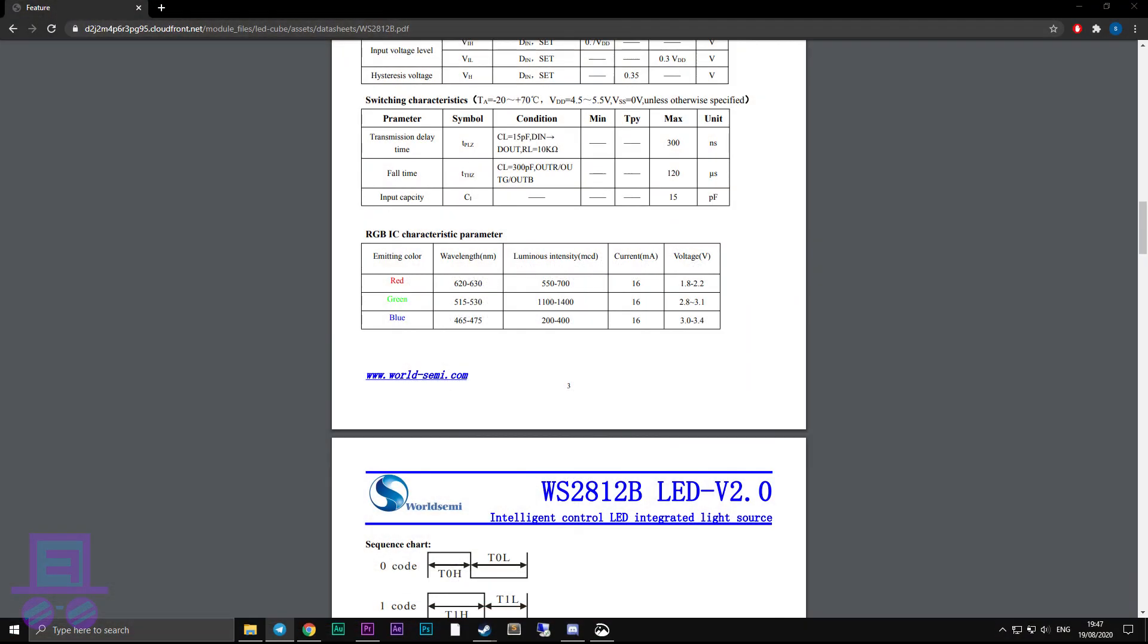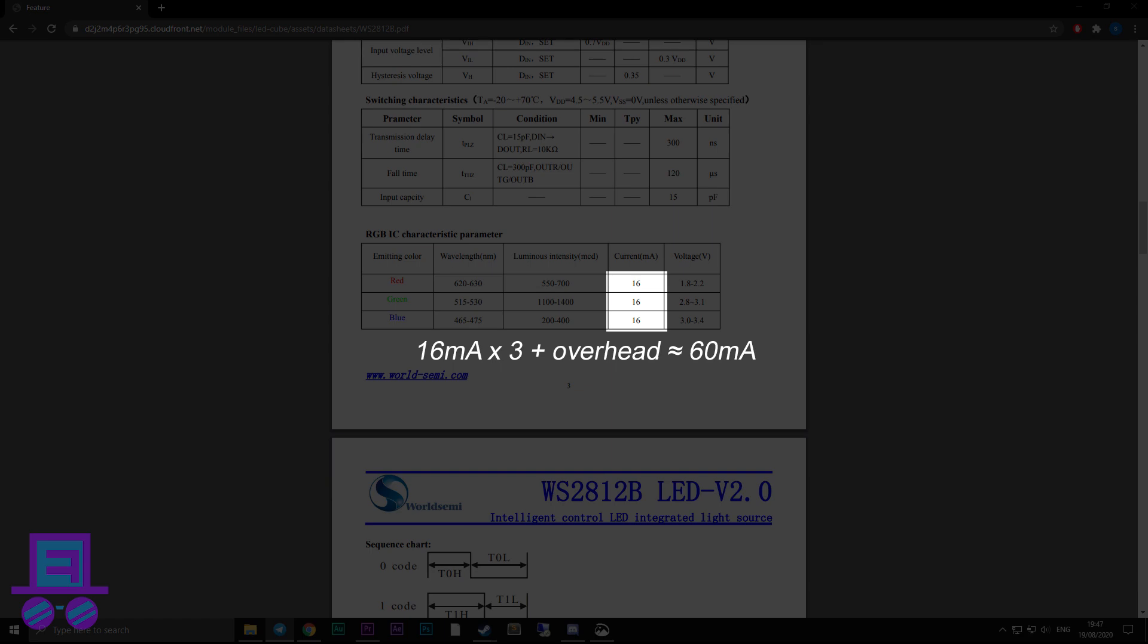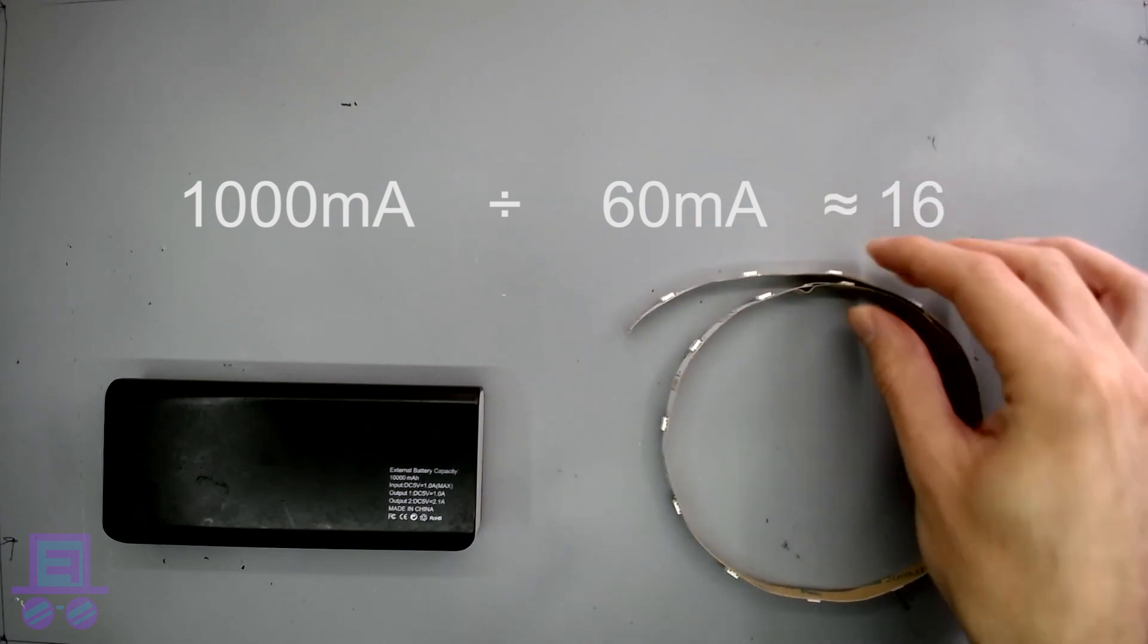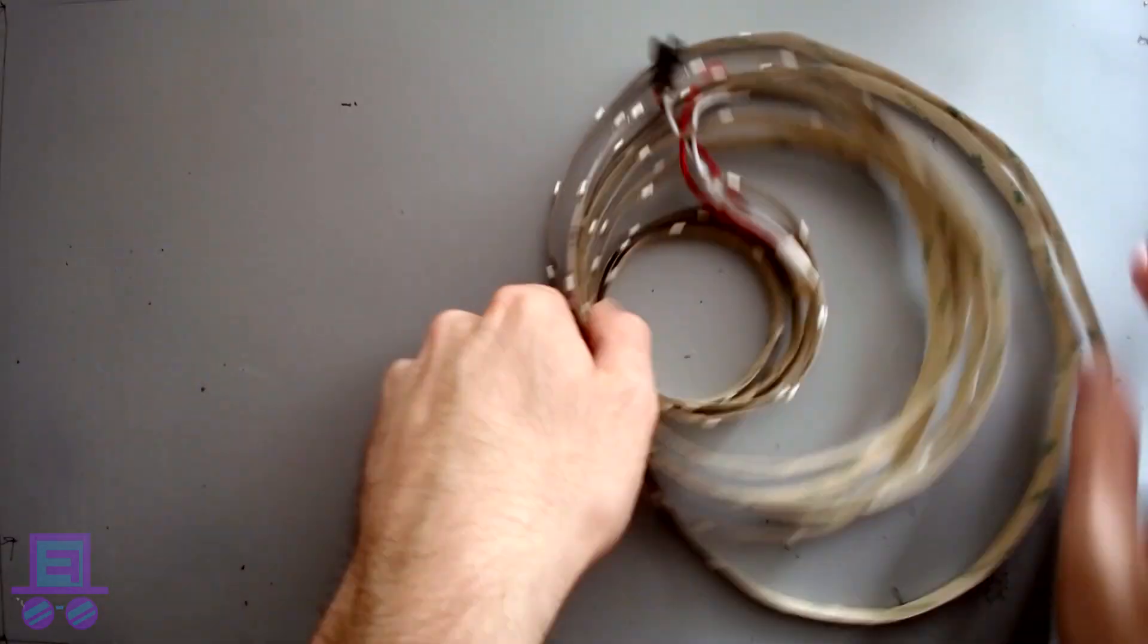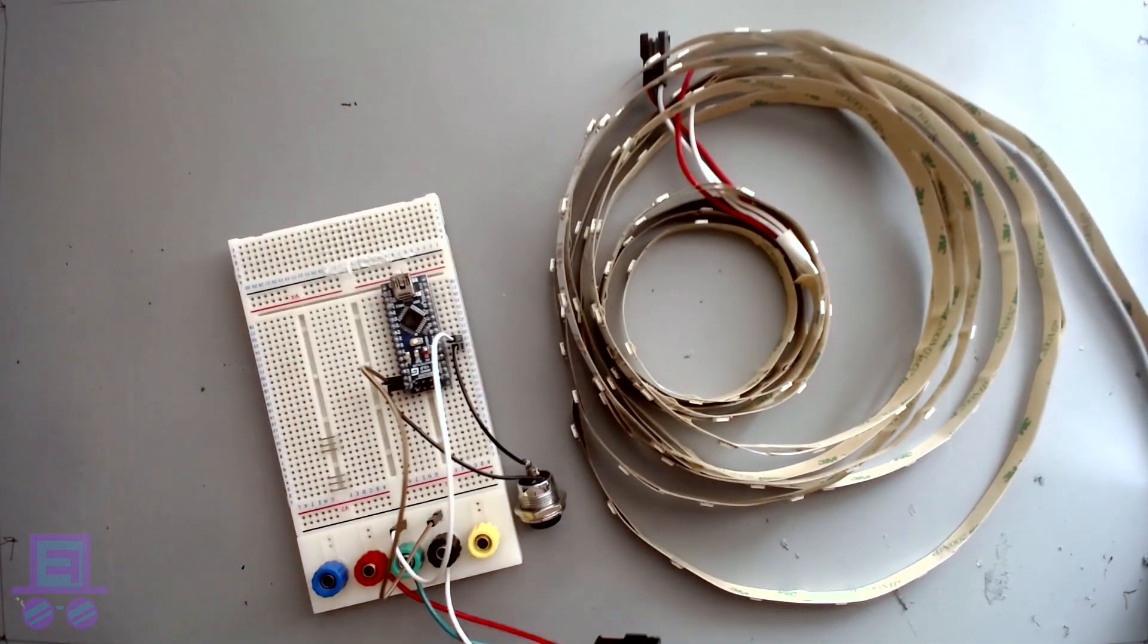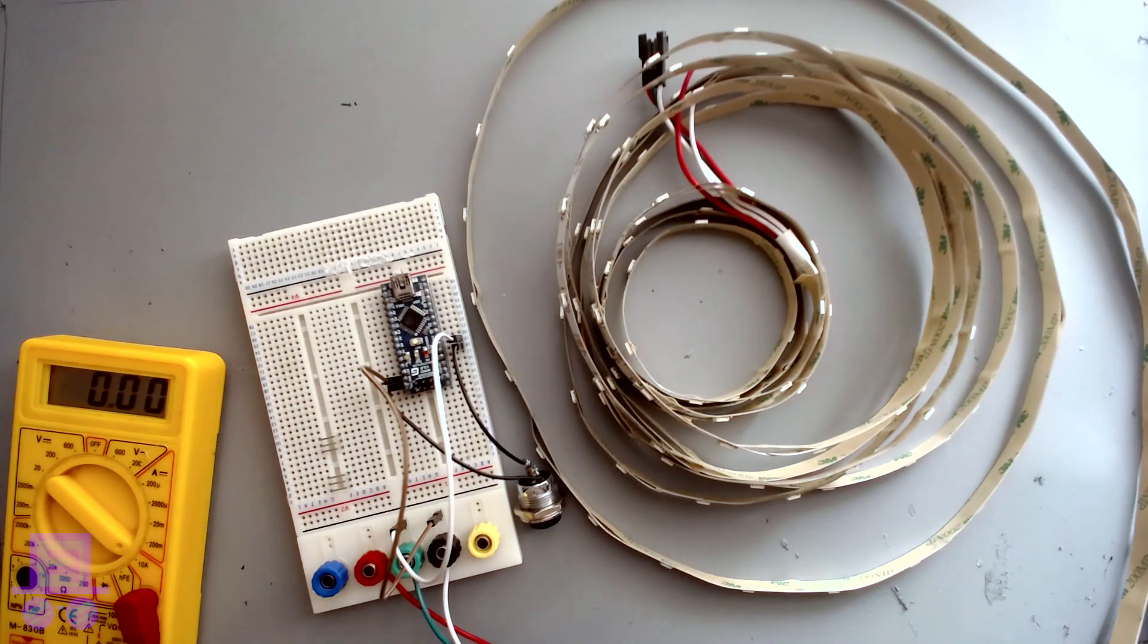Now each of these LEDs can draw up to a maximum of 60 milliamps if the red, green, and blue LEDs are all set to full bright. So if we divide the battery's 1,000 milliamps by a single LED's maximum current draw of 60 milliamps, we can find out that we can power around 16 LEDs with this battery pack. In the real world, we could power around 70. However, when starting out, it's always a good idea to play it safe.